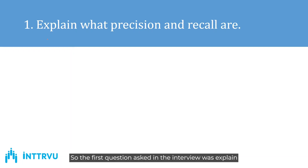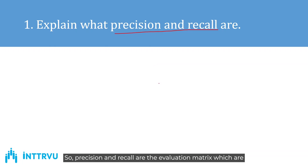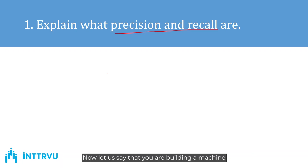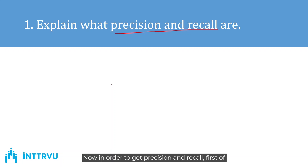The first question asked in the interview was: explain precision and recall. Precision and recall are evaluation metrics used for evaluating classification models in machine learning. For example, if you are building a machine learning model for predicting whether a person has cancer or not based on certain health parameters, recall is more important than precision. To understand precision and recall, you first need to understand the confusion matrix.